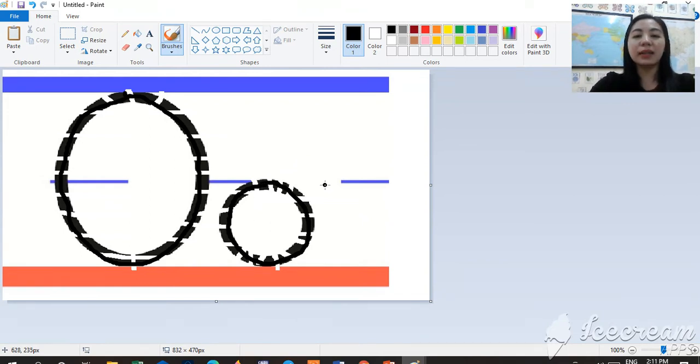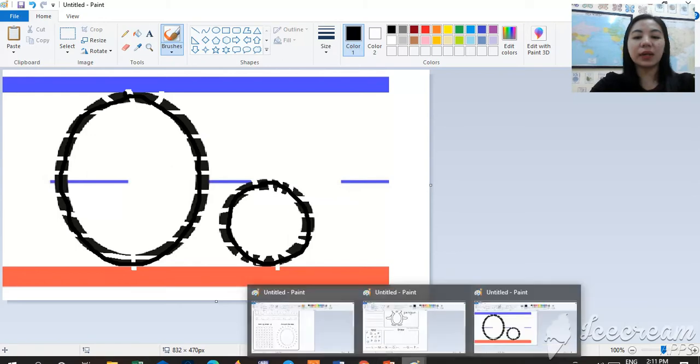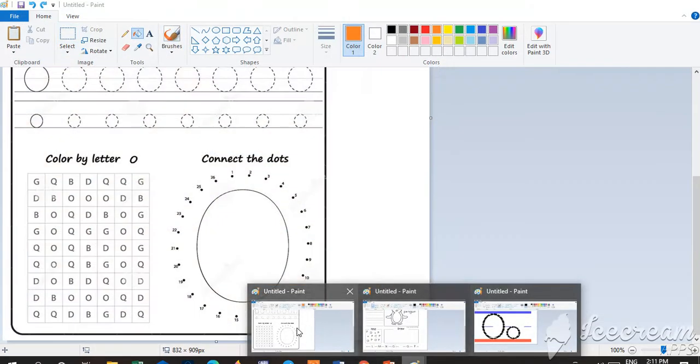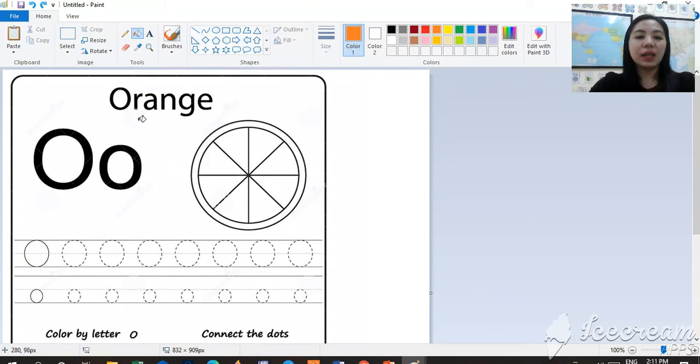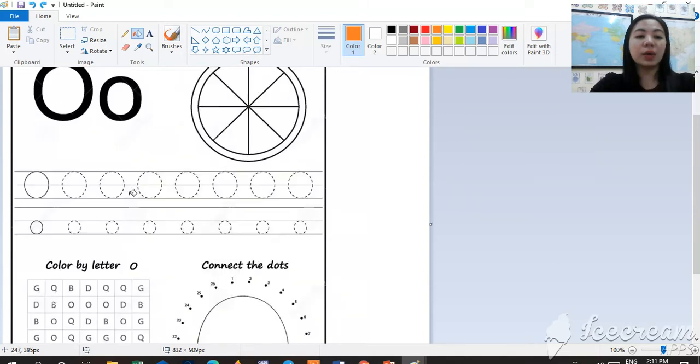And now I prepared something for you to do, an activity. Here for the letter O, uppercase O or letter O. We're going to trace the uppercase O. So that's how we write the uppercase O.